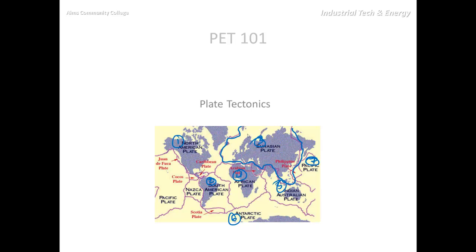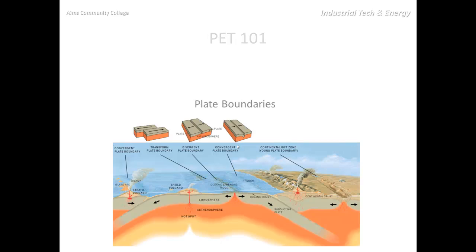I've encircled the Eurasian plate, and as the Eurasian plate moves against the North American plate, a couple of things will happen: either these two plates will move toward one another and one will move underneath the other, or they will move apart from one another, or they will slip against one another.